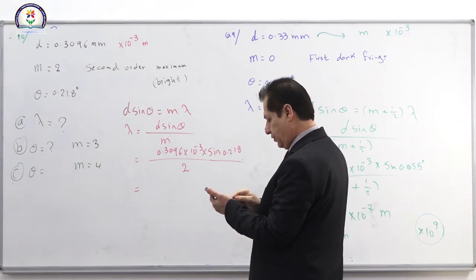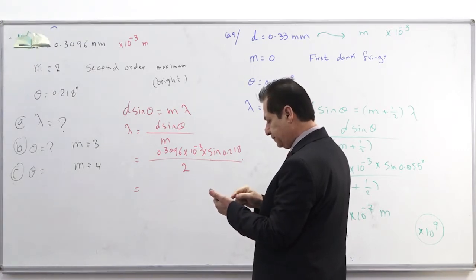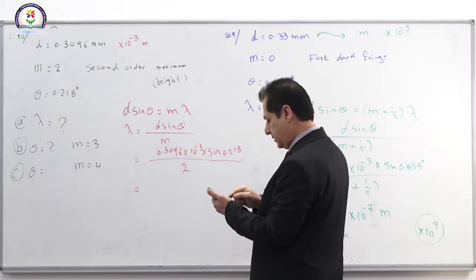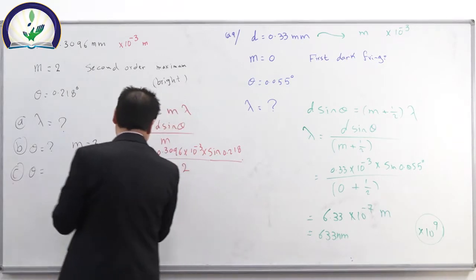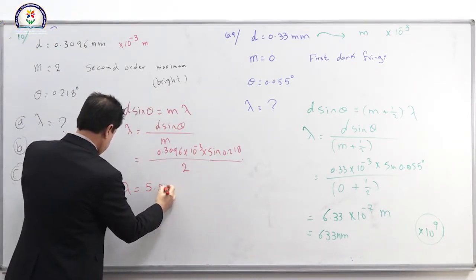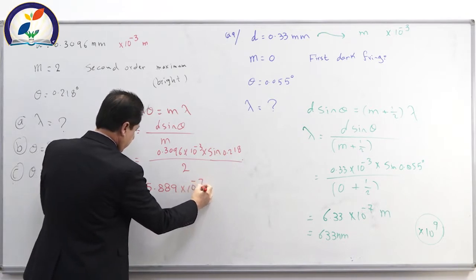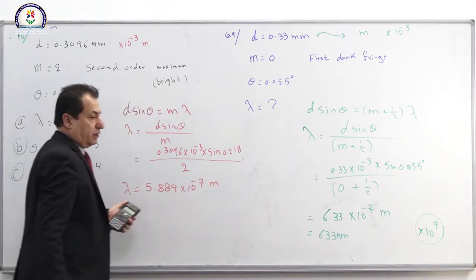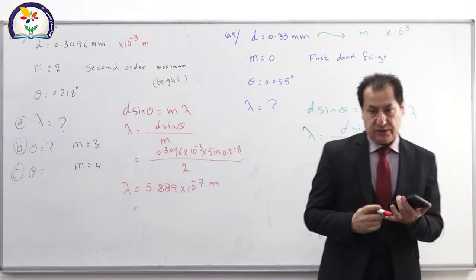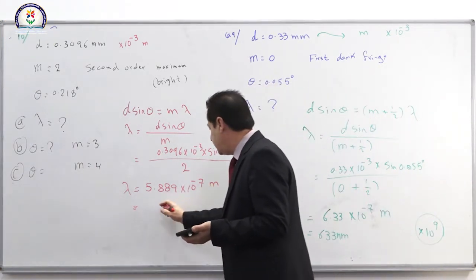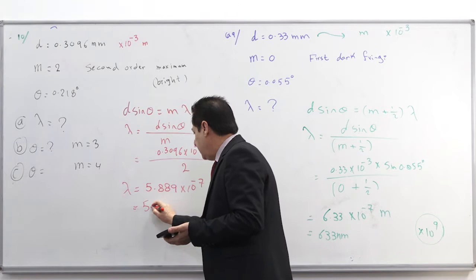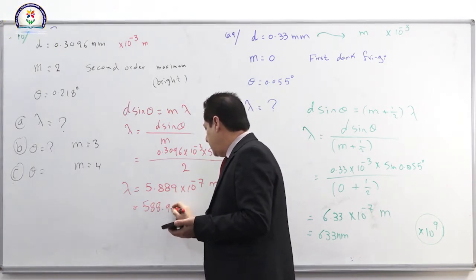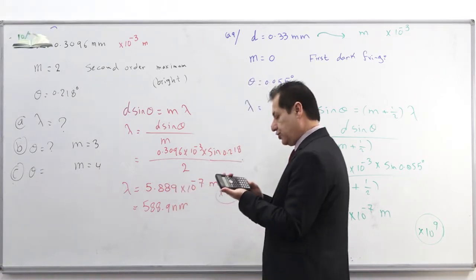Calculating: (0.3096 × 10⁻³) × sin(0.218°) / 2 = 5.889 × 10⁻⁷ meters. Converting to nanometers by multiplying by 10⁹ gives 588.9 nanometers. That is the answer for part A.